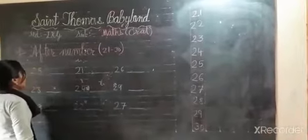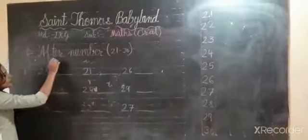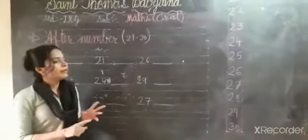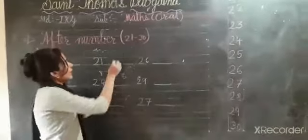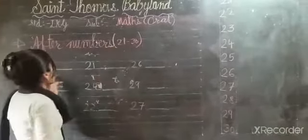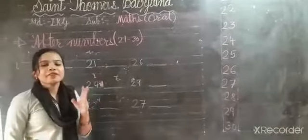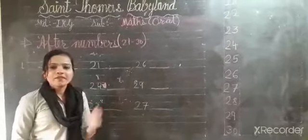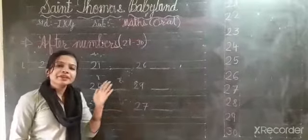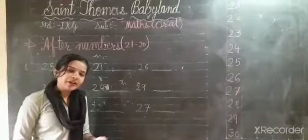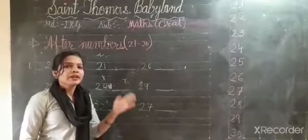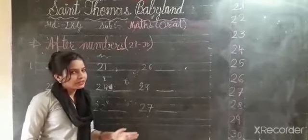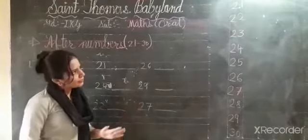Now we are doing after numbers. After numbers means the next number — after number means the number that comes down, the next number in sequence.